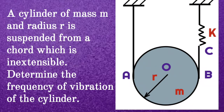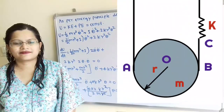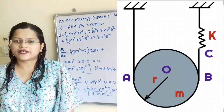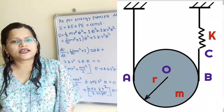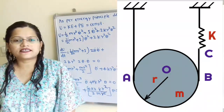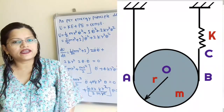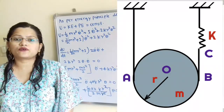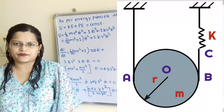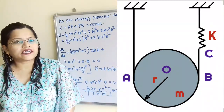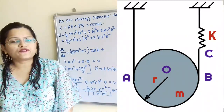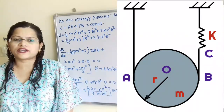Given question: a cylinder of mass m and radius r is suspended from a chord which is inextensible. Determine the frequency of vibration of the cylinder. The cylinder is connected to an inextensible chord which is fixed at one end, while the other end is connected to the spring with stiffness k. We have to find out the natural frequency for this given system.